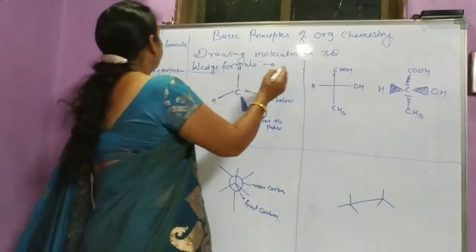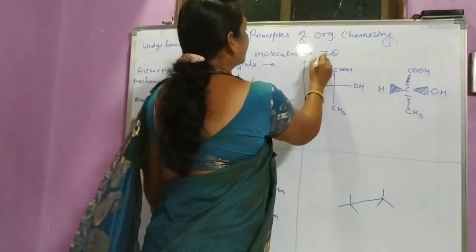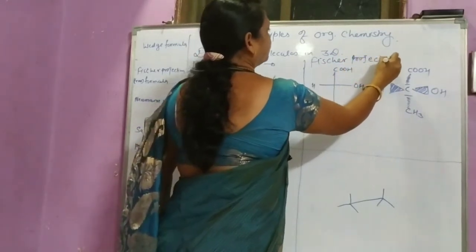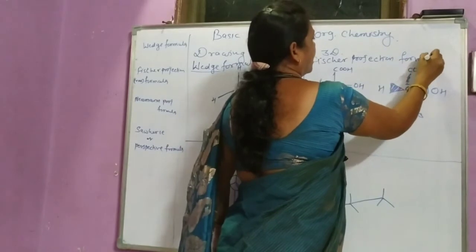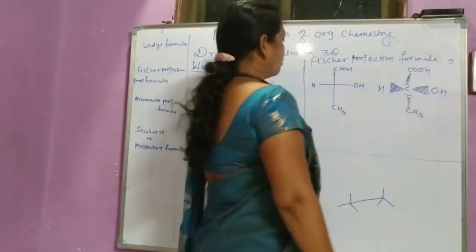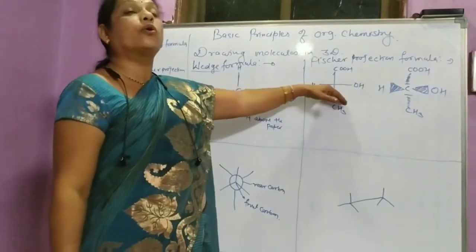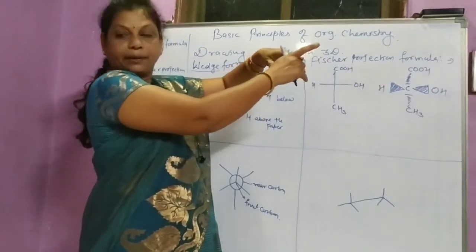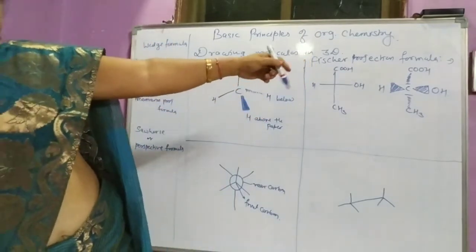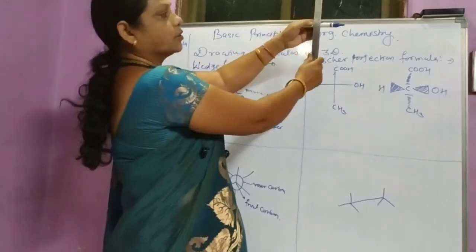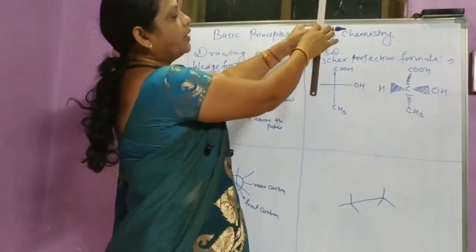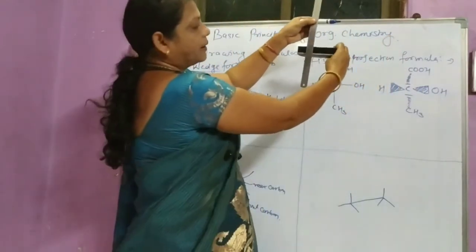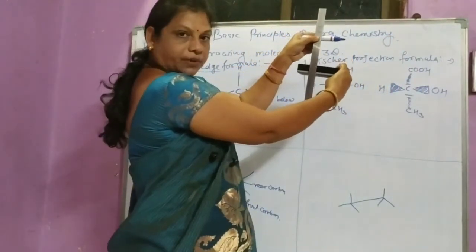The next one is called the Fischer Projection Formula — F-I-S-C-H-E-R Projection Formula. This formula is also called the cross formula. Why is it called cross? Because it is represented by a cross shape. If there is only one carbon, there is only one cross. If there are two carbons, then there are two crosses.